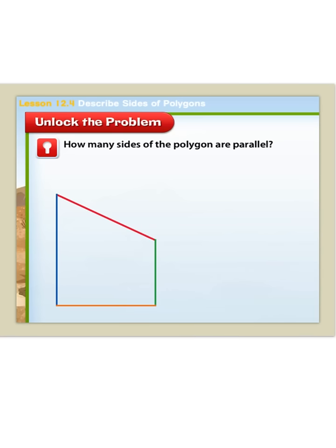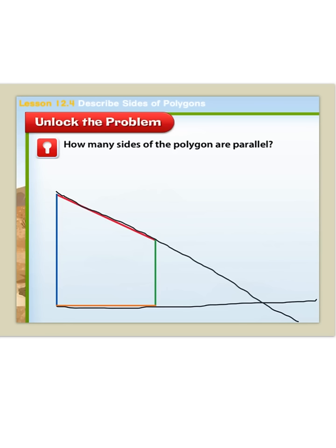Now let's unlock this problem. Let's try and find out how many sides of this polygon are parallel. Let's start with the top and bottom sides. I'm going to use a little trick here to try and continue each side. If I do the same thing for the bottom, I can see that these lines meet and they do cross, so these lines are intersecting. For the left and right sides, if I use that same trick again and extend these lines, I can see that these lines are the same distance apart and they will never touch. So these two lines are parallel.